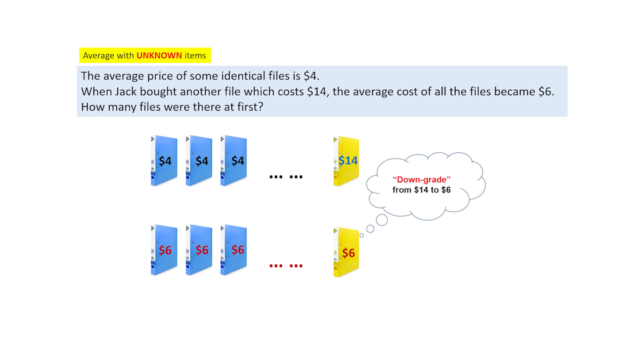It came with a very high value of $14. But now, because you are doing the average, averaging out with the other files, it downgraded from $14 to $6. It's just a fun term that will help you both remember.